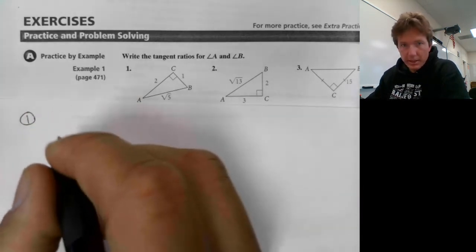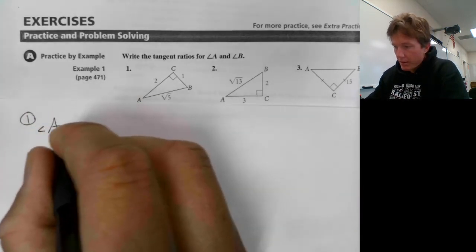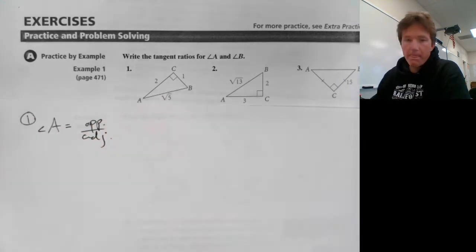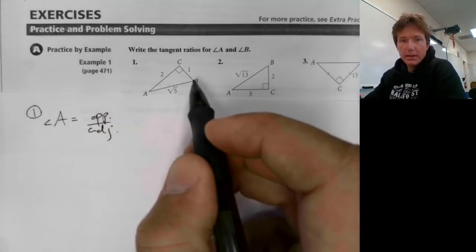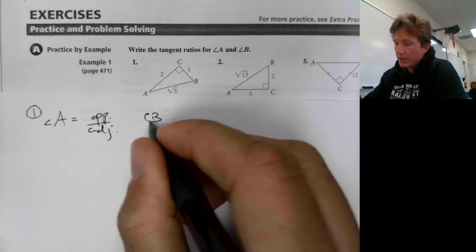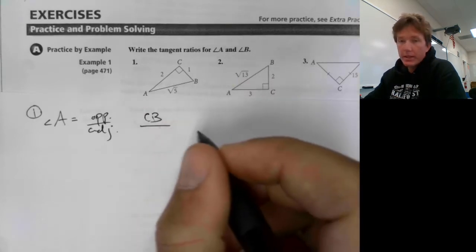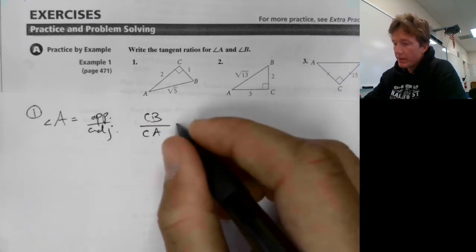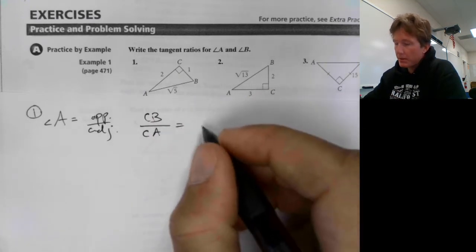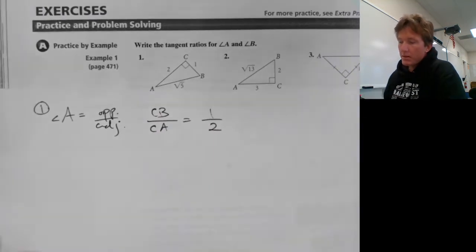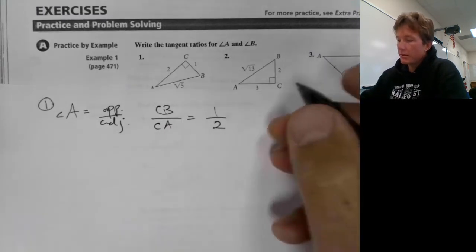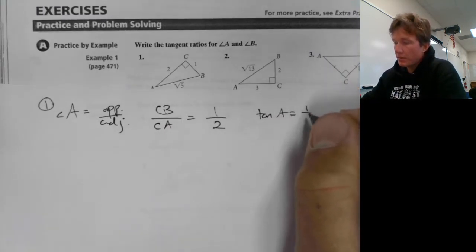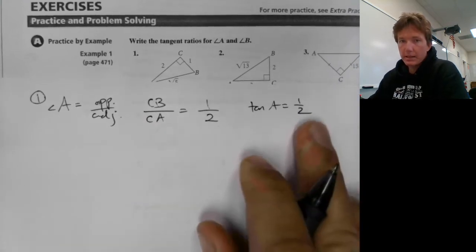So the tangent for angle A will be the opposite side over the adjacent side. The opposite side is going to be CB, and the adjacent side will be CA. Since we have values for that, we can write it down. Tangent of A is equal to one over two. That's exactly how you would write it.